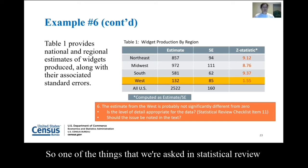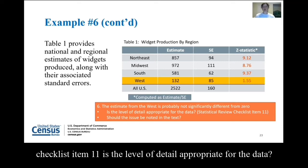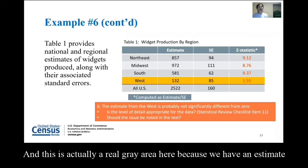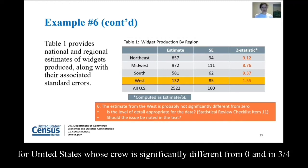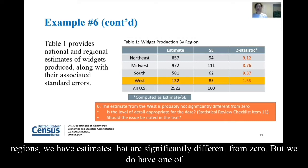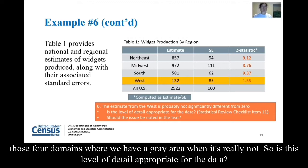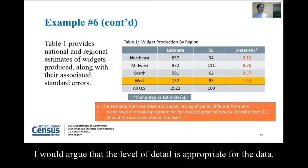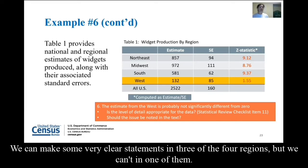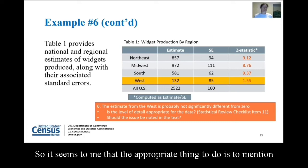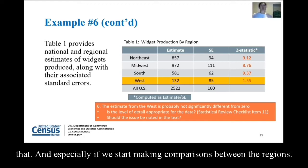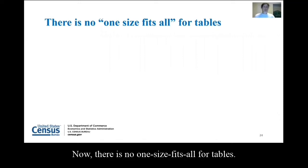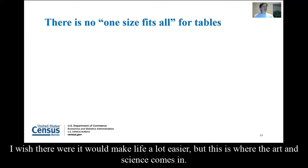I notice there's a problem with the West, in the sense that the Z-statistic is not different from zero. Statistical review checklist item 11 asks: is the level of detail appropriate for the data? We have an estimate for the United States that is clearly significantly different from zero. In three of our four regions we have estimates significantly different from zero. But in one of the four domains — the West — we have a gray area. So is this level of detail appropriate? I would argue yes, but we should make clear statements in three of the four regions, and note that we can't make statements about the West, especially if we start making comparisons between regions.